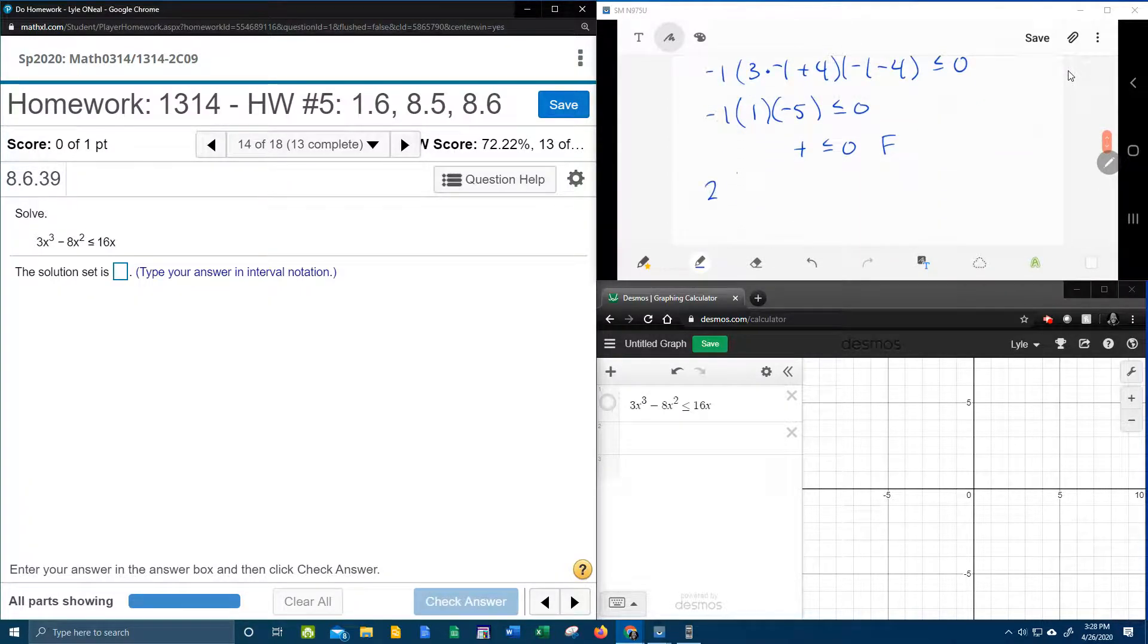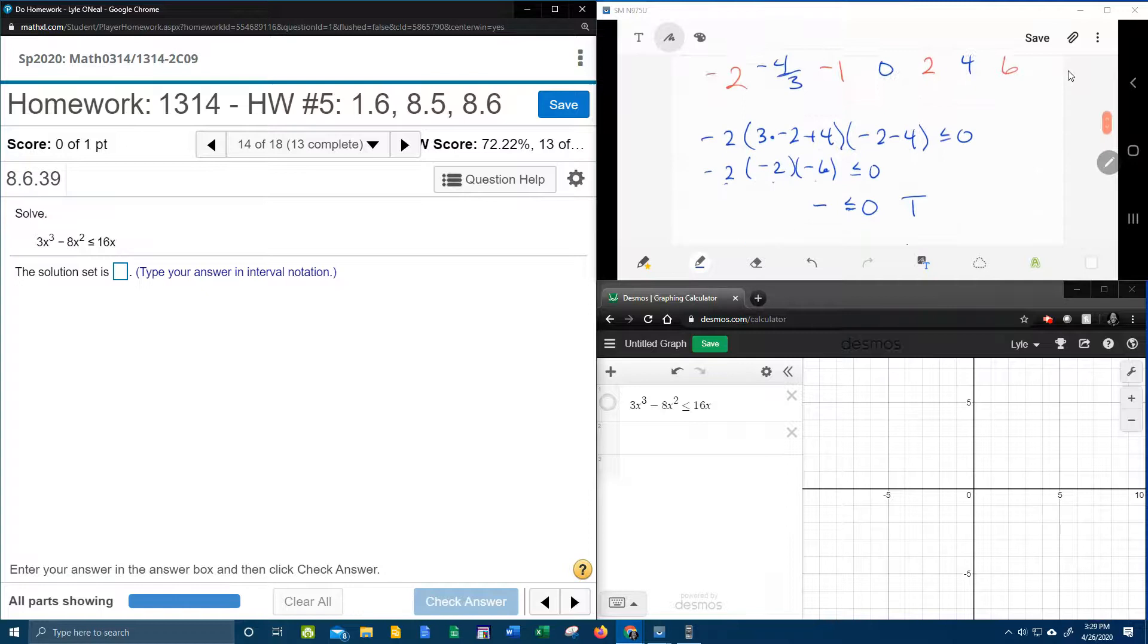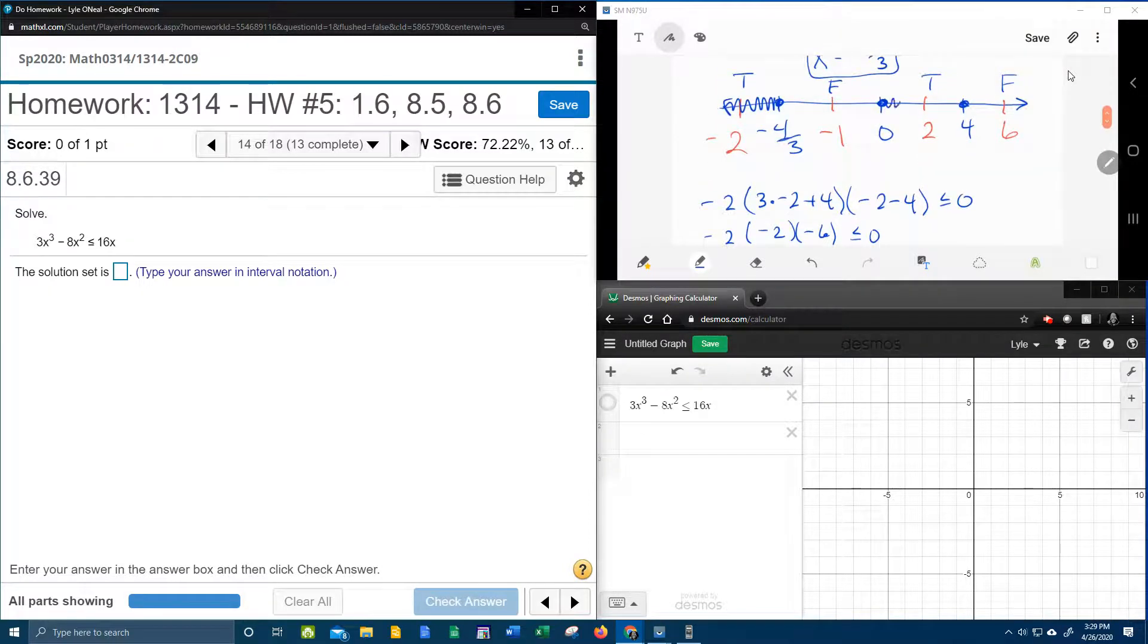So that's going to be 2, 3 times 2 plus 4, 2 minus 4. And that's going to be 2 times 6 plus 4 is 10, 2 minus 4 is negative 2. Positive times a positive times a negative is negative. And is a negative less than or equal to 0? Yes, it is. That is true. And so that means we're going to shade that section of the number line.